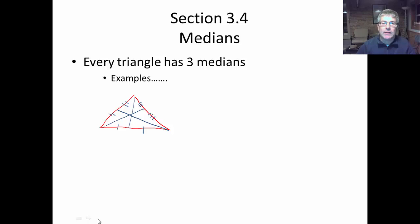So altitudes form right angles and medians bisect the opposite side or go to the midpoint.